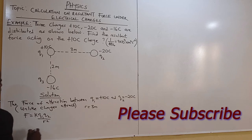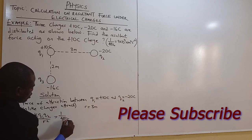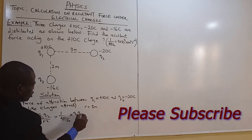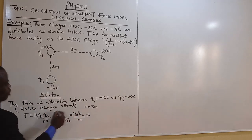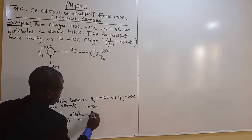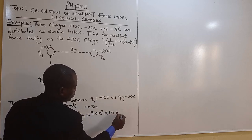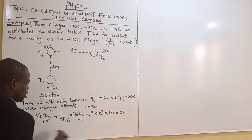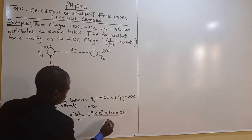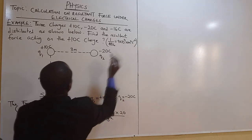The constant k, which is 1 over 4 pi epsilon-naught times q1 times q2 over r squared, is given to us as 9 times 10 to the power 9. The charge q1 times 10 times 20 — we do not use the negative sign because it is just telling us that there are opposite charges — divided by 3 squared.